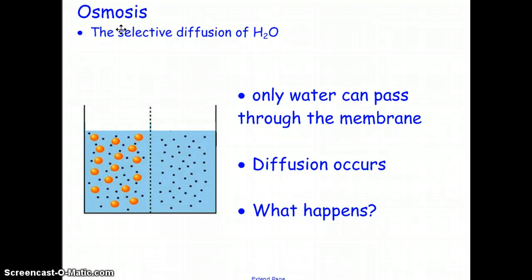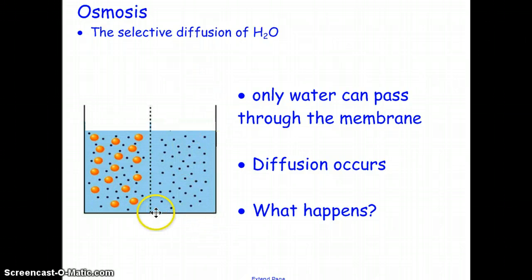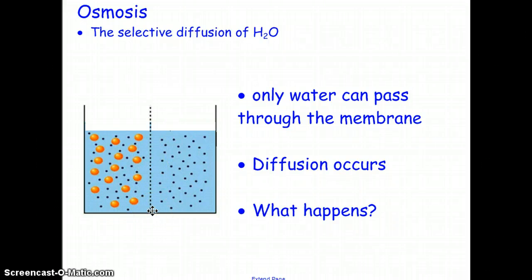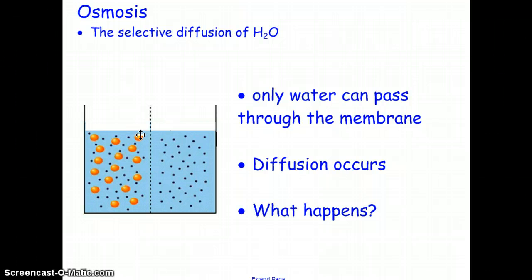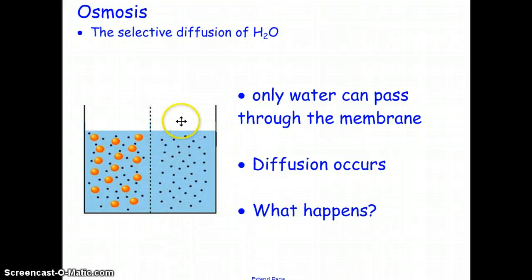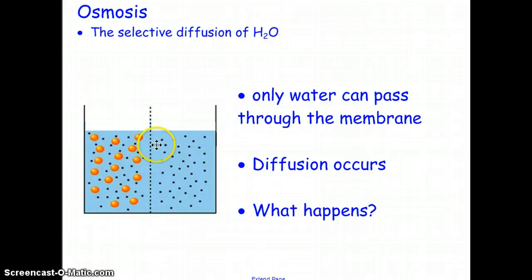Osmosis is the selective diffusion of water — it's diffusion, but it's only water. So if you had a bucket with a membrane down the middle that was only permeable by water, and the black dots represent water molecules while the orange molecules represent sugar, we have a high concentration of sugar on the left and a low concentration on the right. You'd think the sugar molecules would diffuse from left to right, but the problem is these molecules can't get through the membrane because the holes are too small.